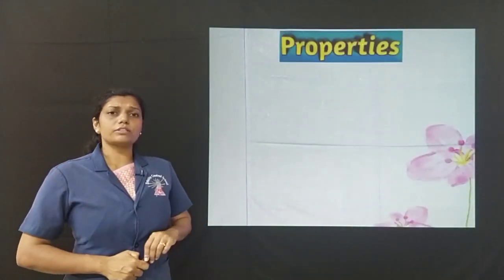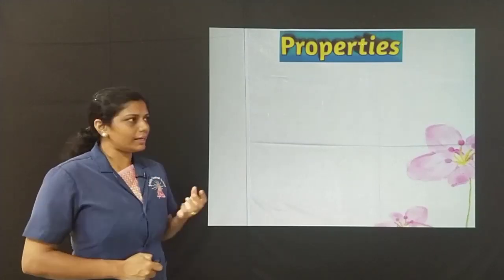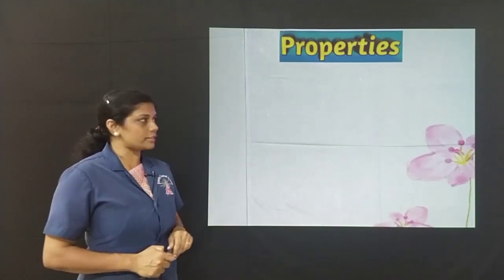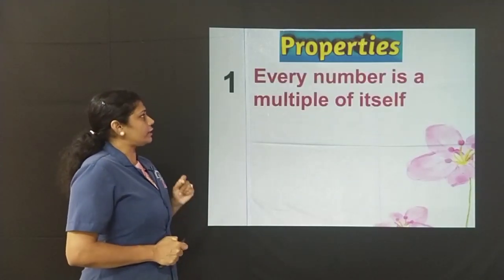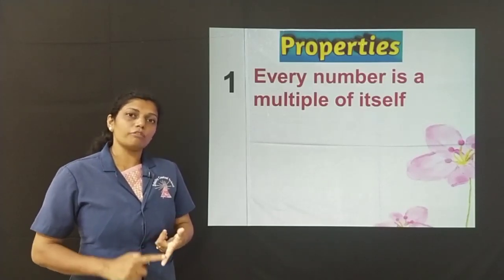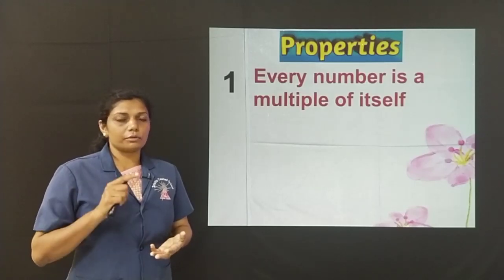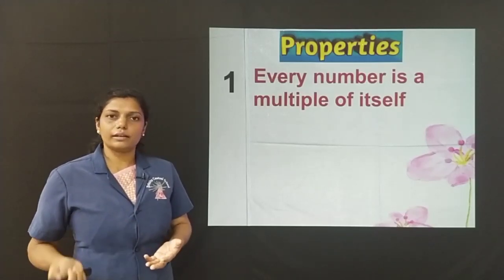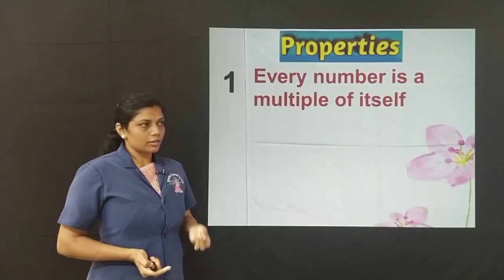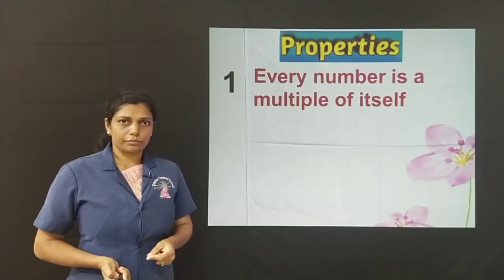What are the properties of multiples then? To understand multiples better, let us understand its nature or let us understand its properties. Every number is a multiple of itself. What does it mean? 3 is a multiple of 3. 10 is a multiple of 10 because when you multiply 10 by 1, you get 10. So, 10 is the multiple of 10. So, every number is a multiple of itself. Clear?